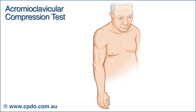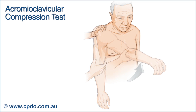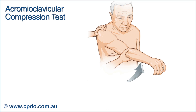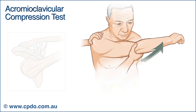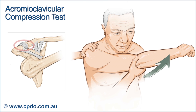To perform this test, the patient is sitting or standing with the involved arm by the side and the elbow fully extended. The examiner places one hand on the patient's shoulder and the other hand on the patient's elbow. The examiner lifts the arm to 90 degrees of shoulder flexion and then pushes the arm across the patient's body, creating a passive horizontal adduction. This manoeuvre compresses the Acromioclavicular Joint of the involved arm.